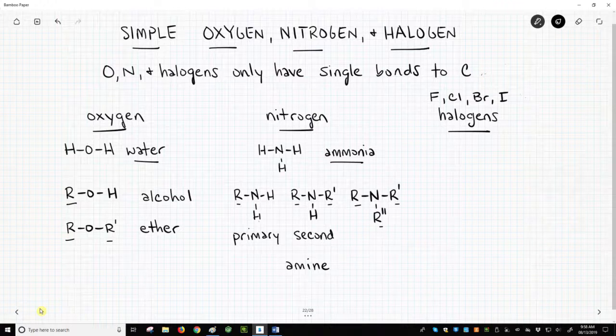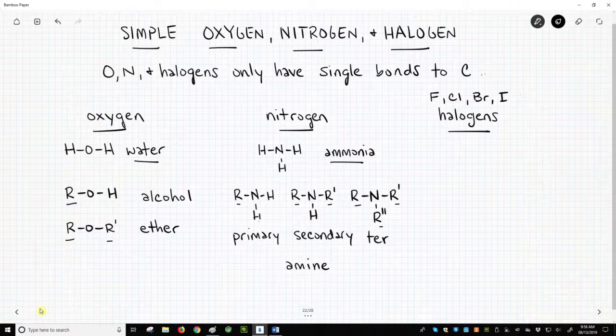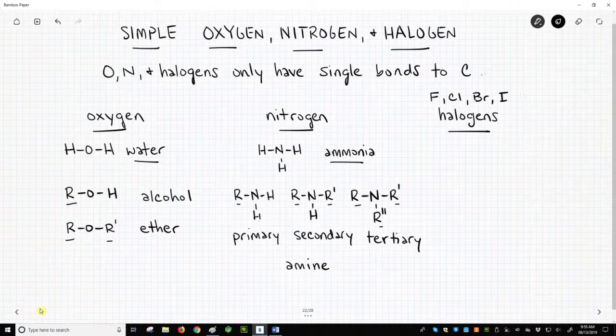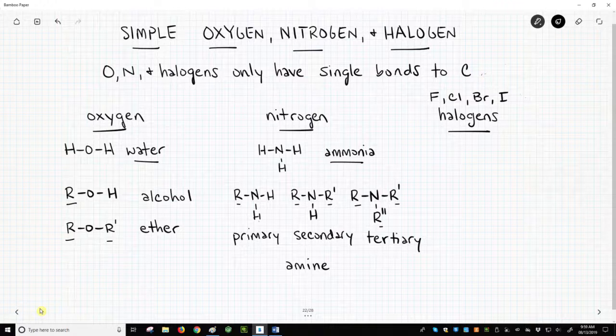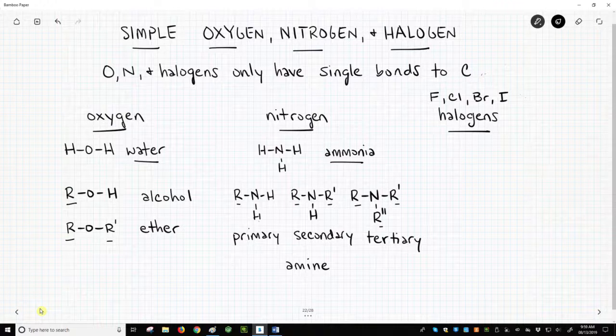While an R group is a carbon group, R groups for all the molecules on this slide cannot have a carbon-oxygen double bond right next to our oxygen, nitrogen, or halogen of interest. This CO double bond is a special case that we will cover in a later video.